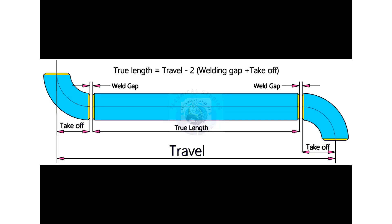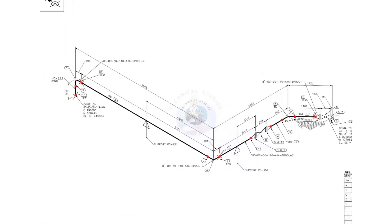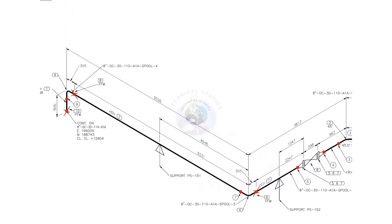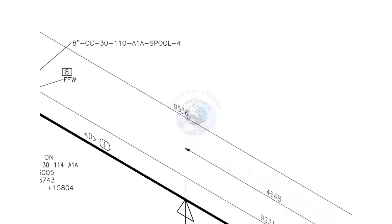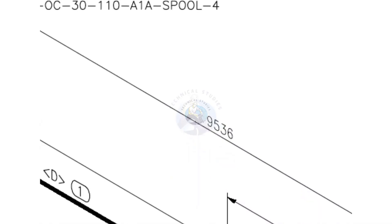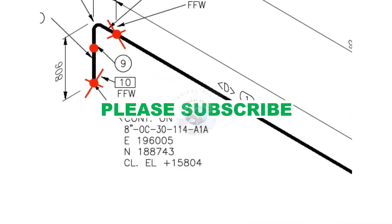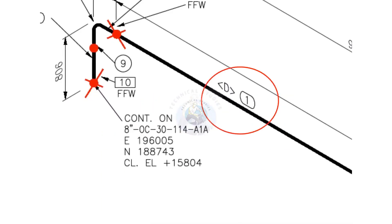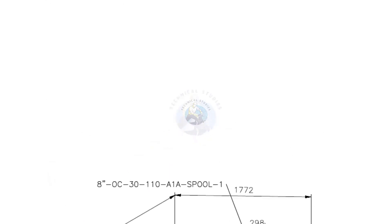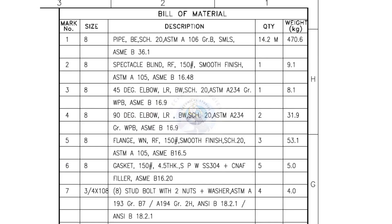Let us go to some examples. Here the travel length is 9536. Let us check the diameter of the pipe. The item number is 1. Going to the material list, item number 1 is a bevel end, schedule 20, seamless pipe.